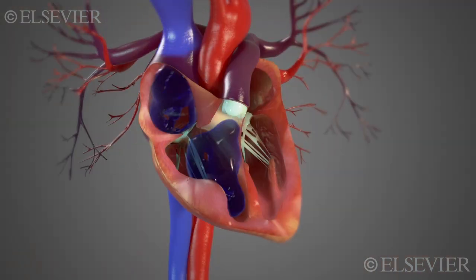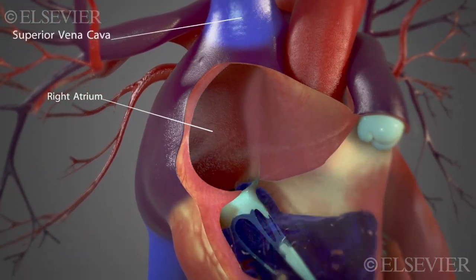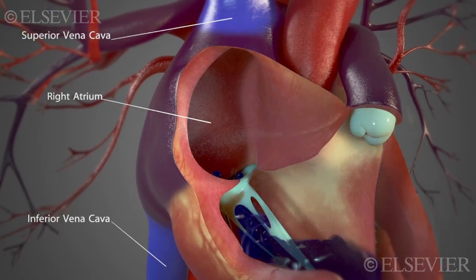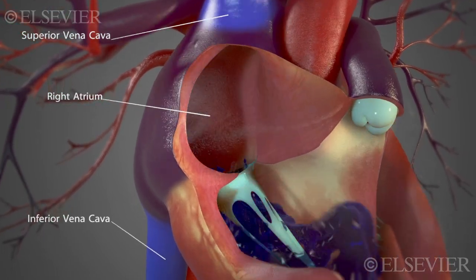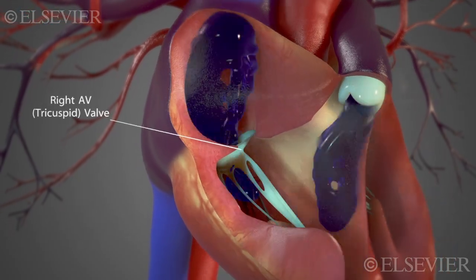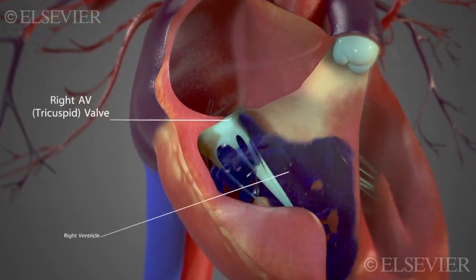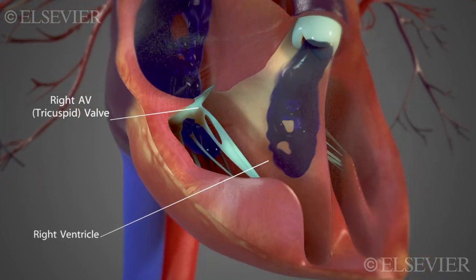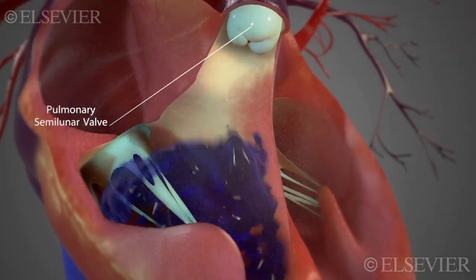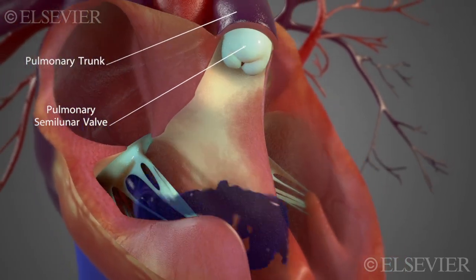The right atrium receives deoxygenated blood from the superior vena cava and the inferior vena cava. The blood pushes open the right atrioventricular or tricuspid valve and enters the right ventricle. The right ventricle pumps this blood through the pulmonary semilunar valve into the pulmonary trunk and arteries, which carry it to the lungs for oxygenation.